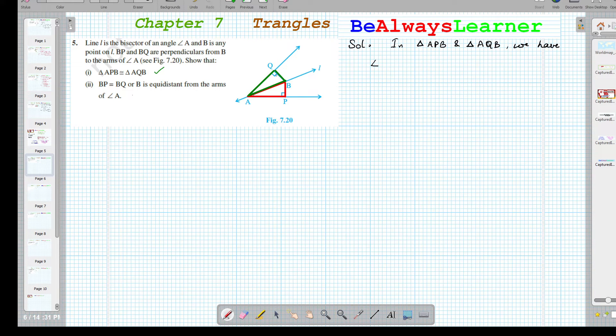First of all, we have to see that this angle is a right angle. In both the triangles, we have one right angle. So we can say the angle at P in this triangle is equal to the angle at Q in the other triangle.